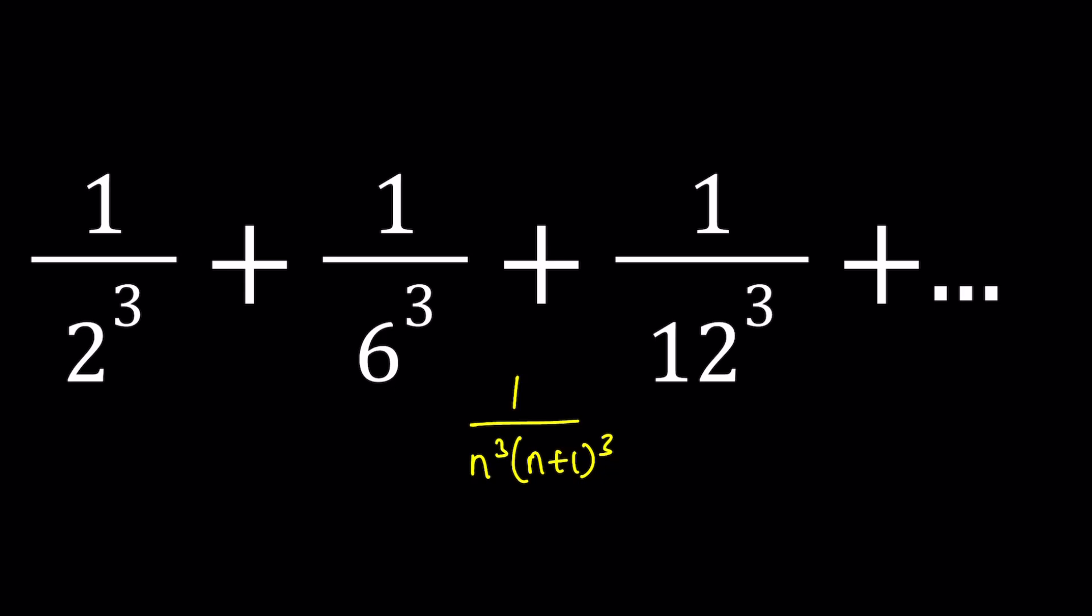If you think about it, these are consecutive integers being multiplied together. 2 is 1 times 2, 6 is 2 times 3. 3 times 4 is 12 and then you take the cube. So the next term after 3 times 4 is going to be 4 times 5, which is 1 over 20 cubed, and so on. We're going to add these numbers all the way up to infinity.